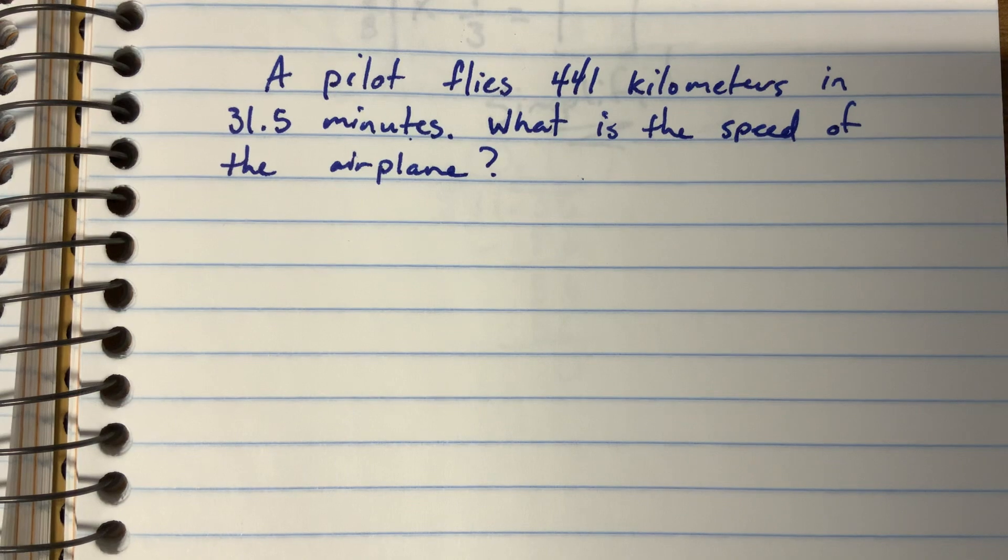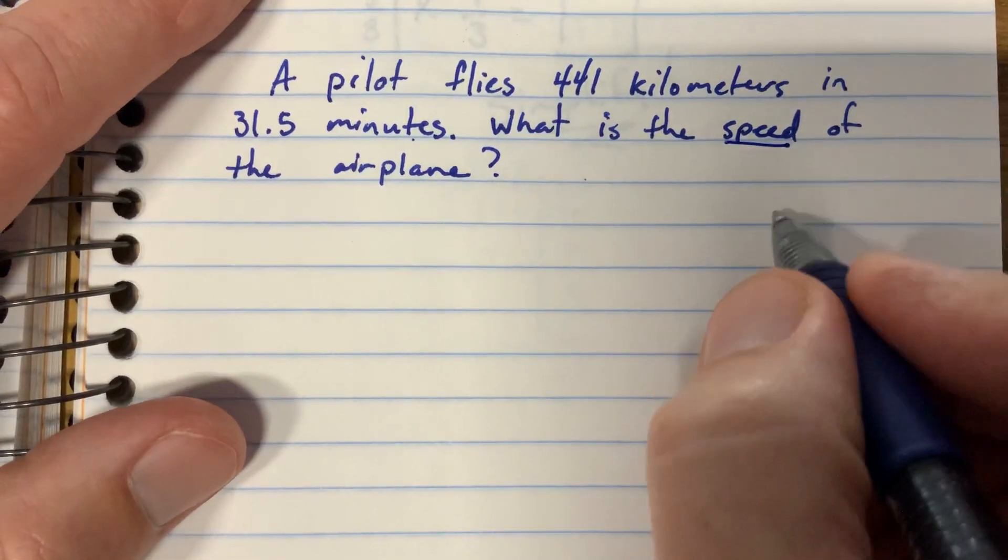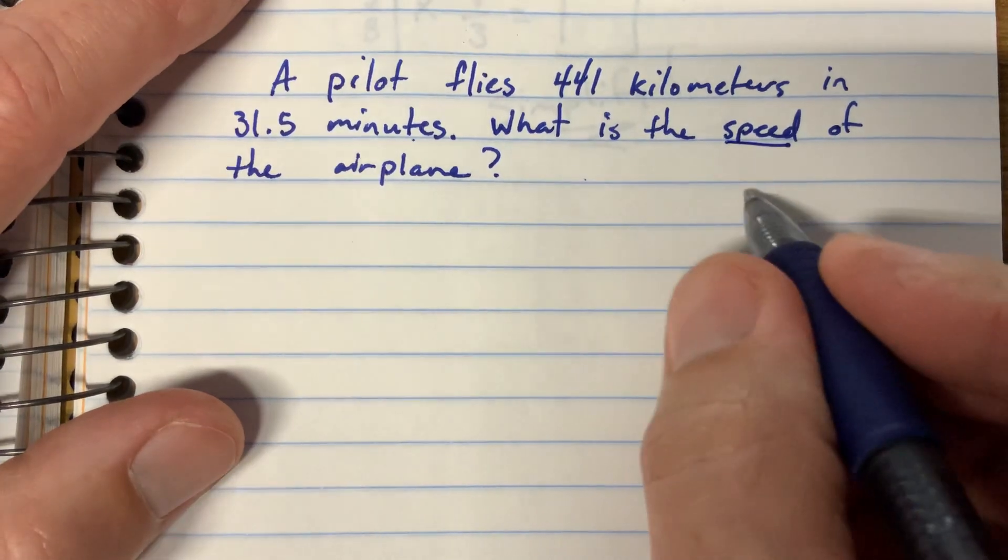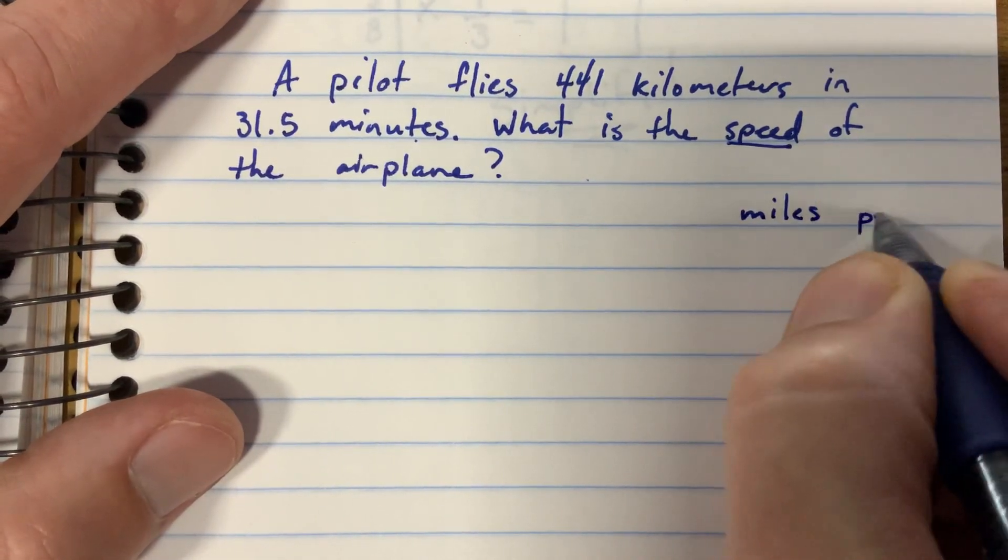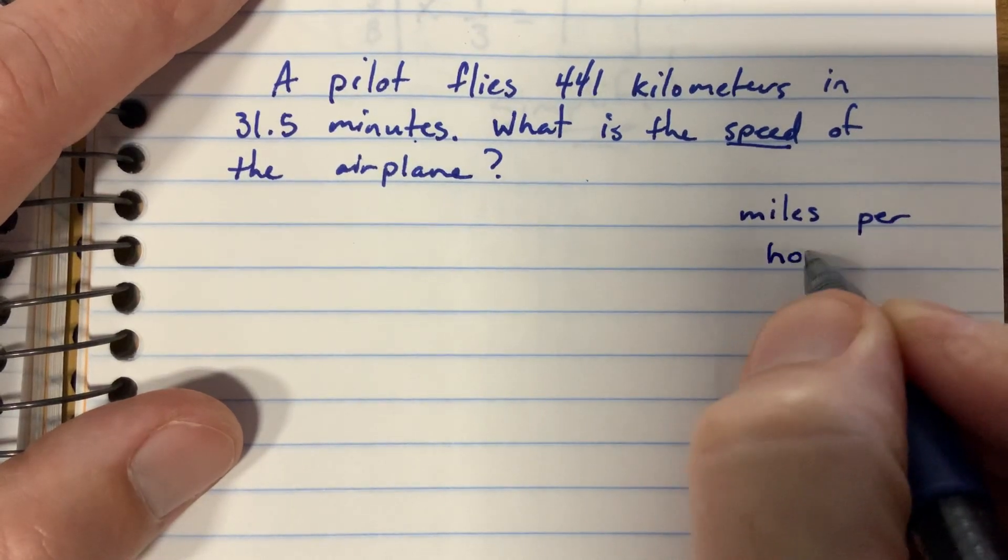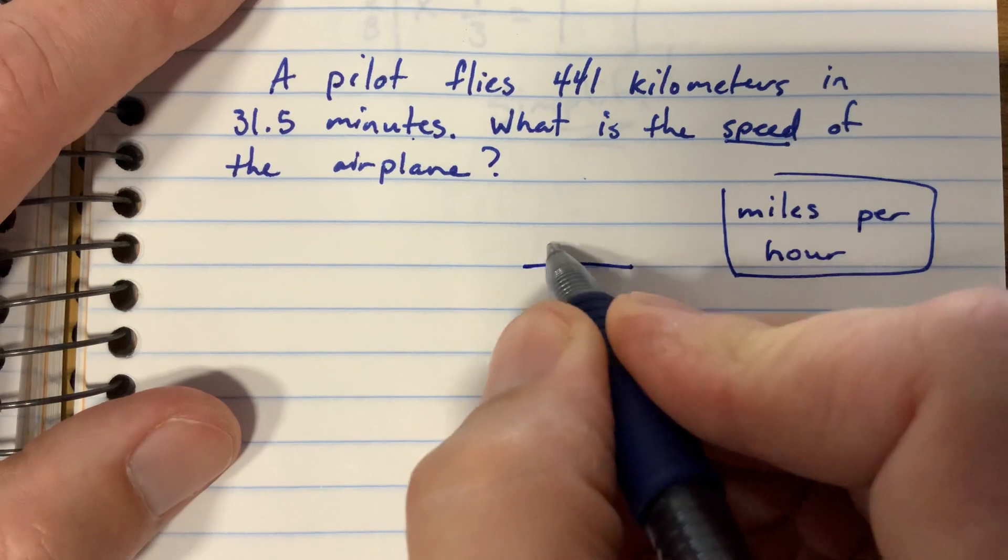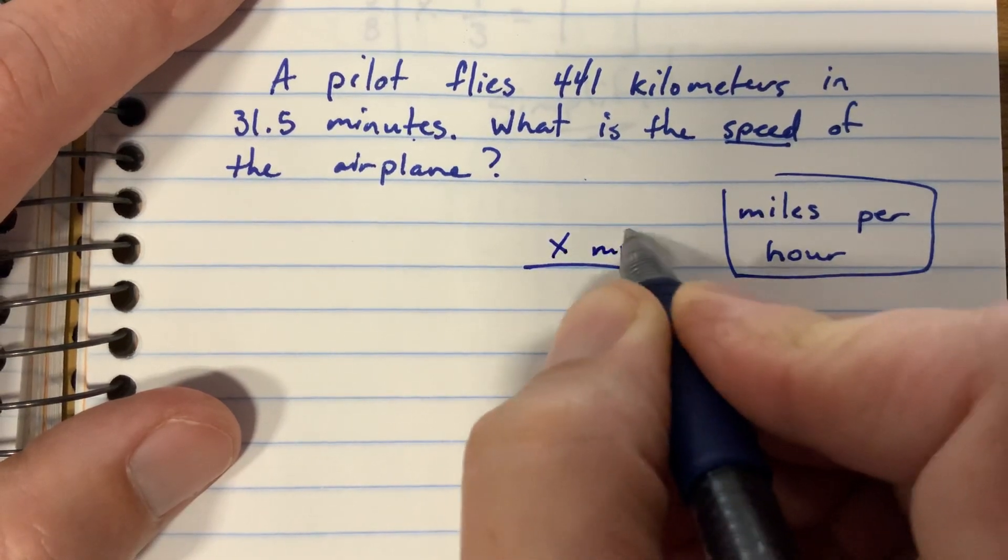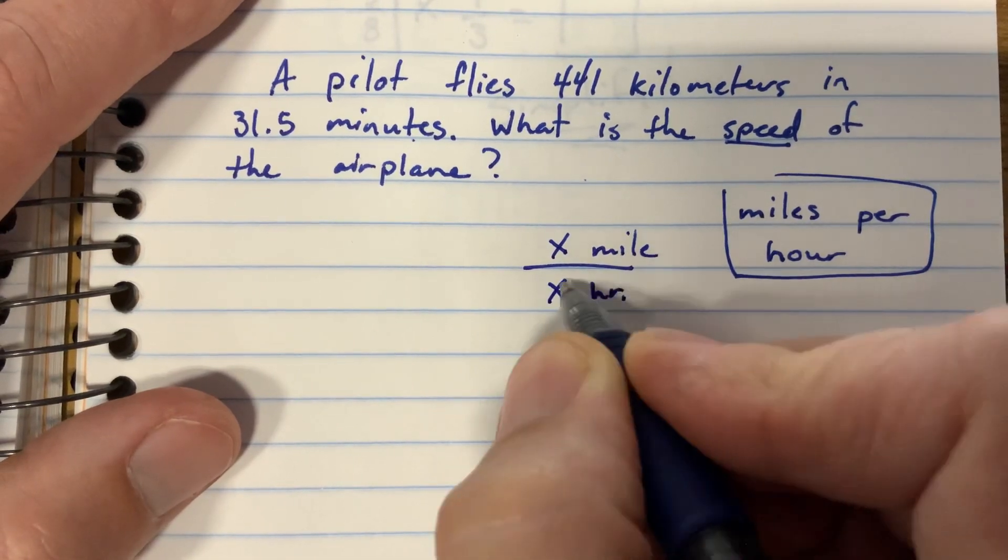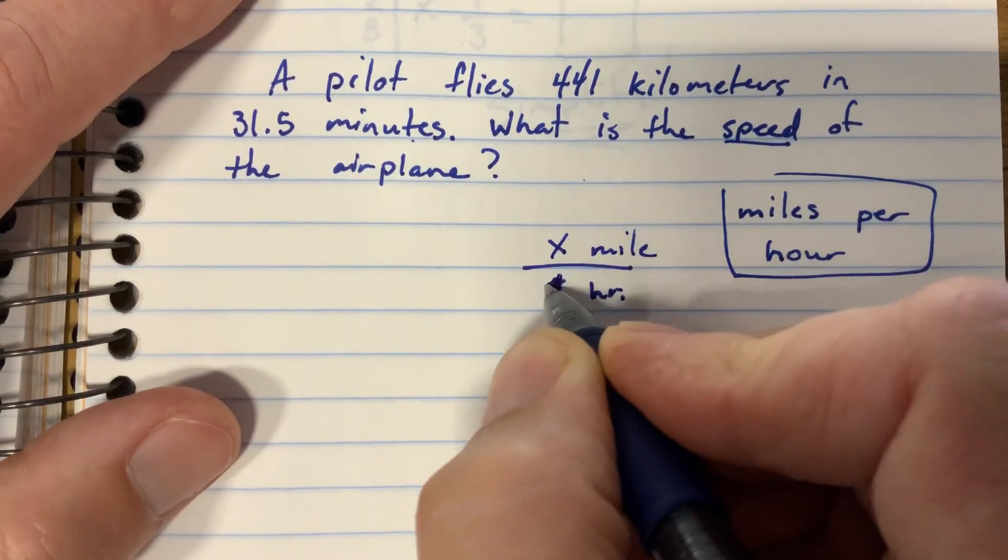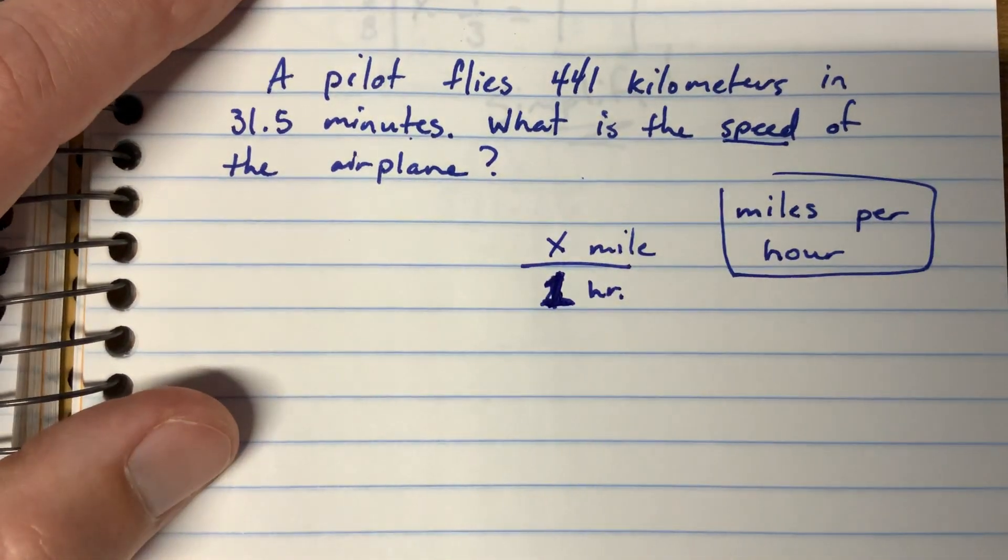Speed. What is the speed? How we measure speed here in the United States is miles per hour. So we need a ratio here of how many miles per how many hours for one hour. How many miles in one hour?